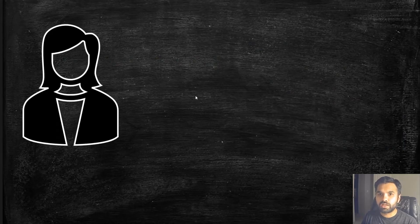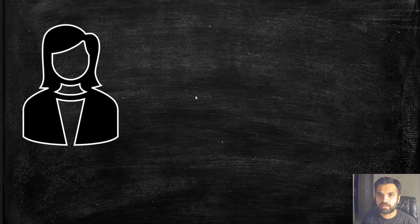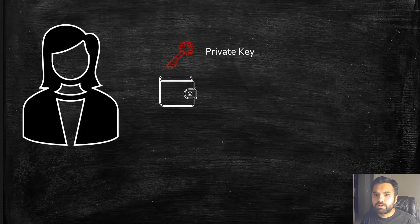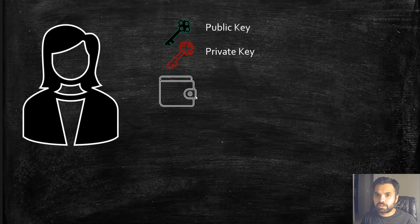Suppose there is a person who wants to send money to someone else — and in this session, when we say money we mean cryptocurrency. There is a crypto wallet, similar to our regular wallet. With the crypto wallet, there will be two keys attached to it — these are the keys we generated in one of the previous videos with PGP encryption. There will be a public key and a private key.